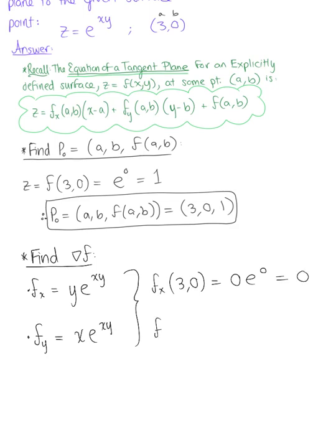And the partial derivative with respect to y at 3, 0 leaves us with 3 times the natural exponential raised to the 0, which is 3.